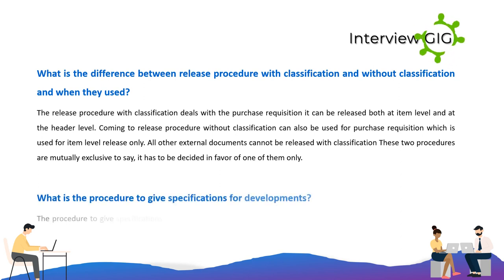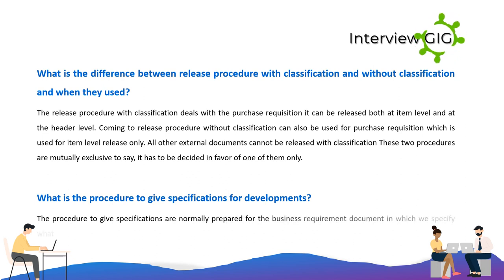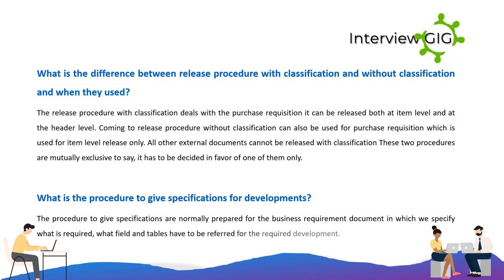What is the procedure to give specifications for developments? The procedure to give specifications involves normally preparing a business requirement document in which you specify what is required and what fields and tables have to be referred to for the required development.